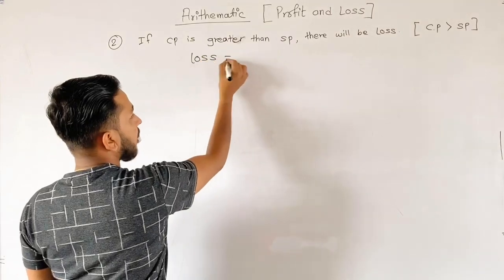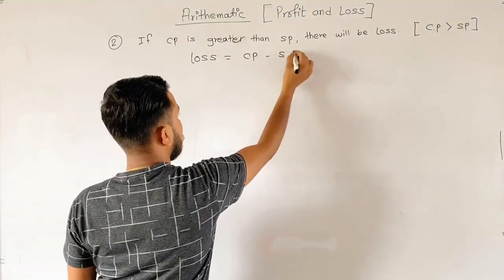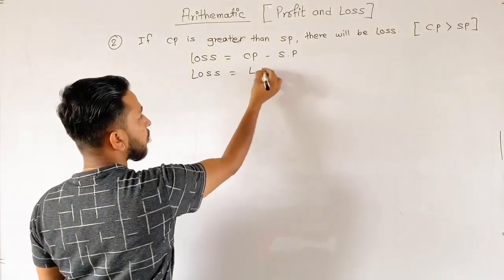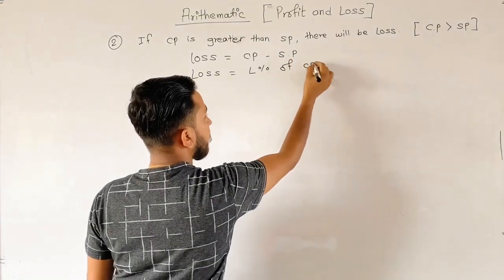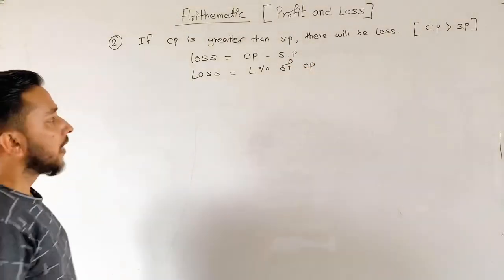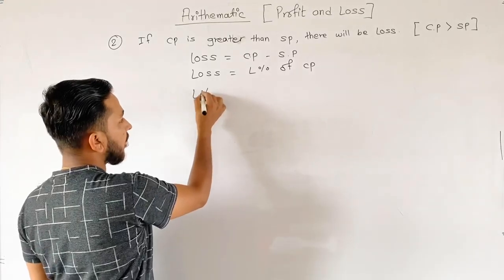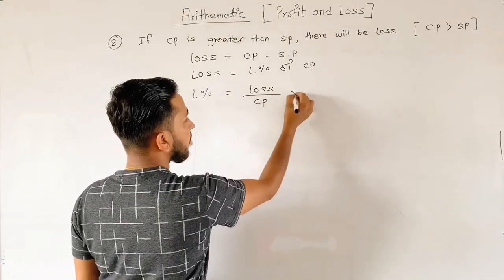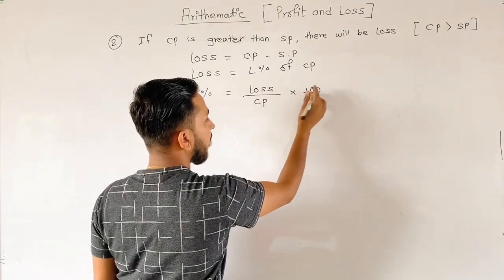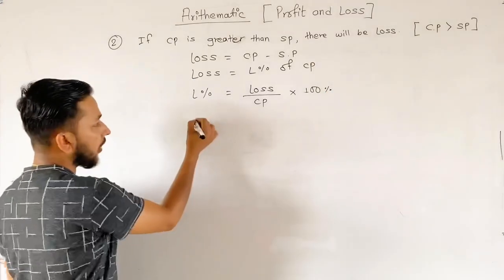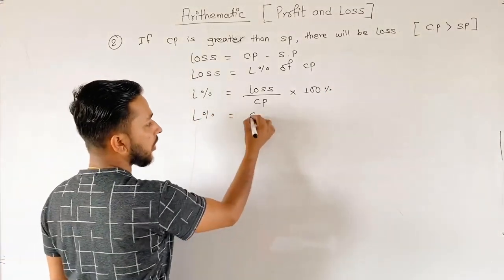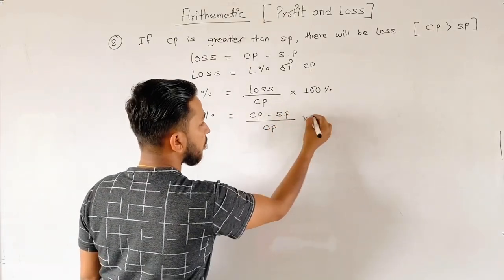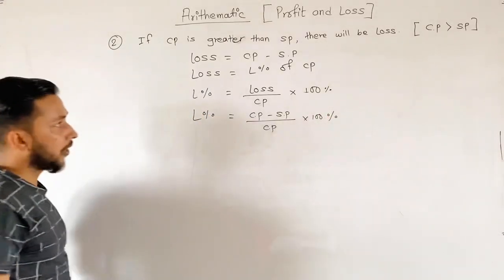First of all, Loss equals CP minus SP. Loss equals loss percentage of CP. This formula is: Loss percentage equals Loss by CP into 100. Similarly, loss percentage equals SP minus CP by CP into 100 percentage.